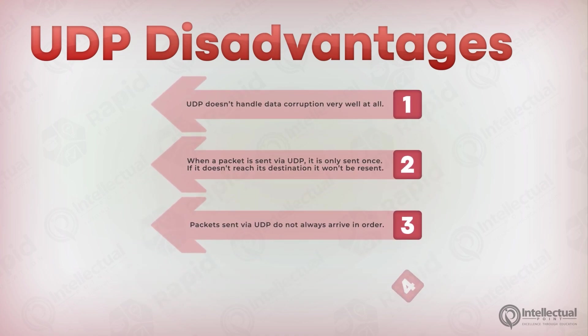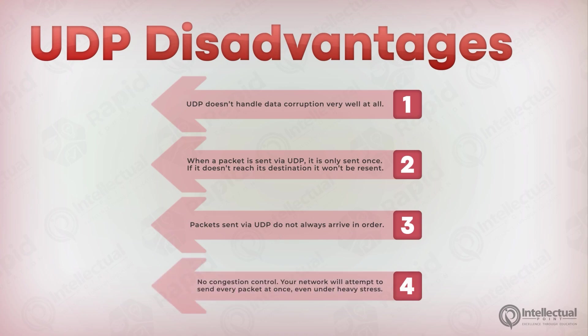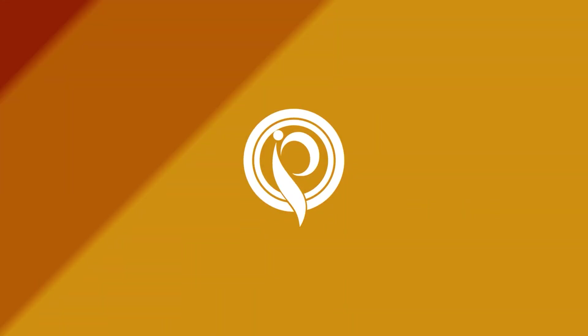And lastly, there is no congestion control, meaning if your network is receiving a lot of packets, it will try and send them all at once, causing an increase in packet drop. You can see UDP has its advantages, but it's not very reliable. That's where TCP comes into play.